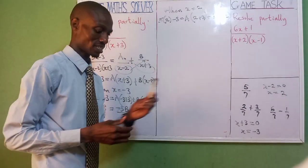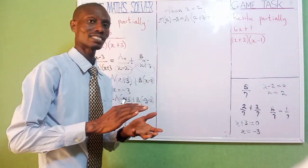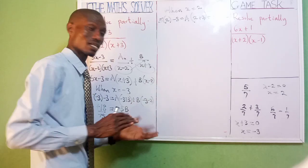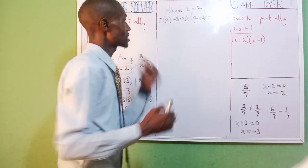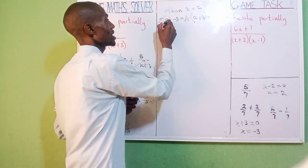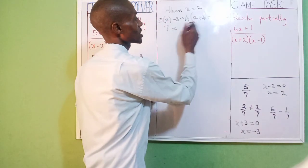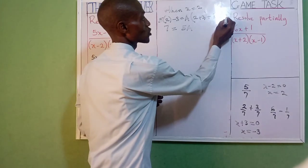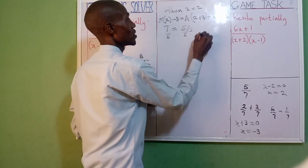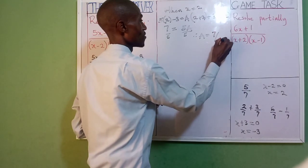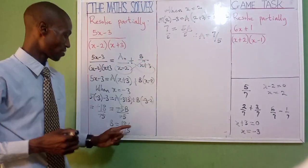5 into bracket 2 minus 3 equals A into bracket 2 plus 3, plus B into bracket 2 minus 2. That's elimination method. 5 times 2 is 10, 10 minus 3 is 7, equal to 2 plus 3 which is 5a. Because 2 minus 2 is 0, divide both sides by 5. Therefore a equals 7 over 5. We have gotten our a: a is 7 over 5, and b is 18 over 5.